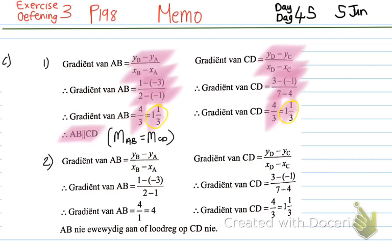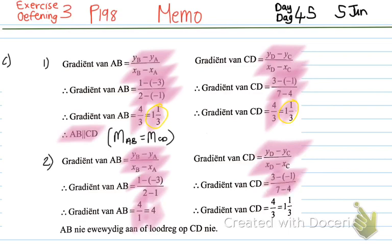Number C2: the gradient of AB is 1 minus negative 3 over 2 minus 1, giving 4 over 1, which is 4. The gradient of CD is 3 minus negative 1 over 7 minus 4, giving 4 over 3, which is 1 and a third. These two have nothing to do with one another — 4 and 1 and a third are not equal, and they definitely don't multiply to give negative 1. So AB is neither parallel nor perpendicular to CD.